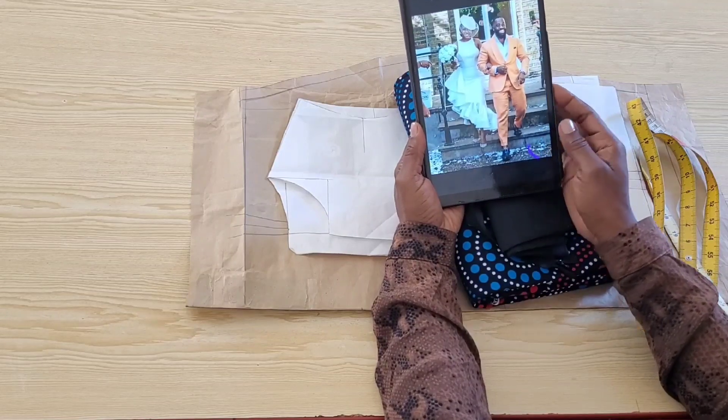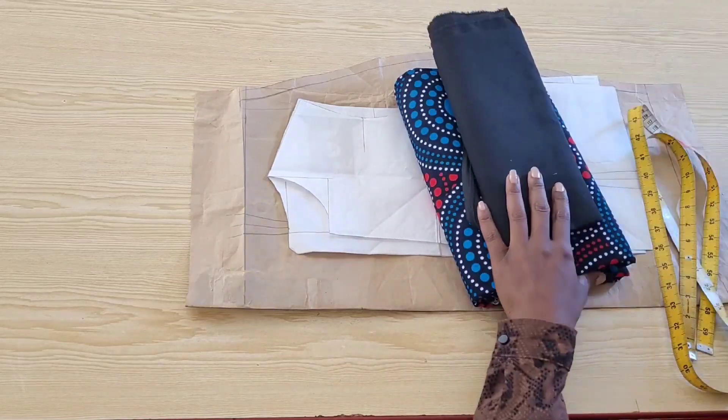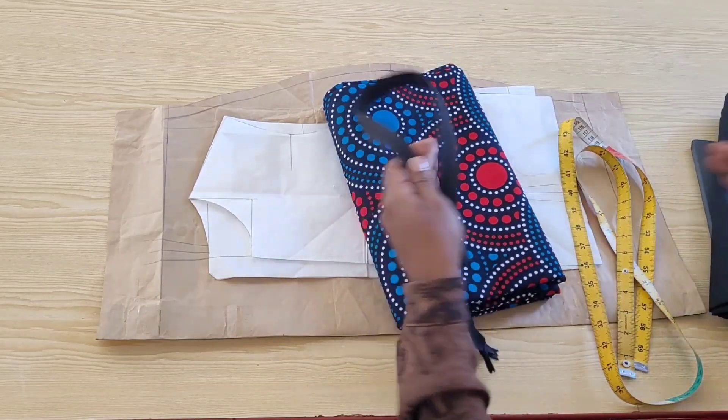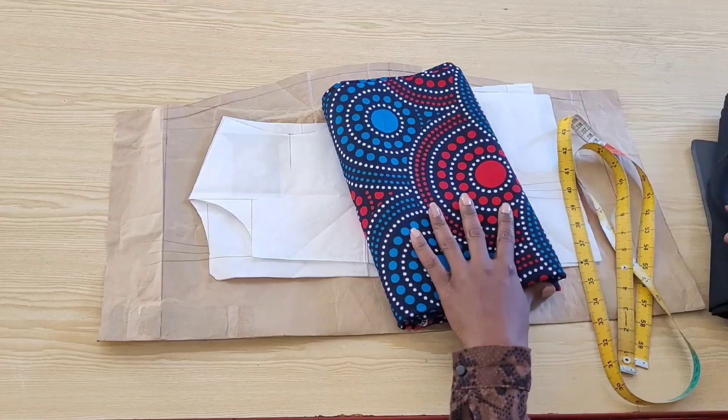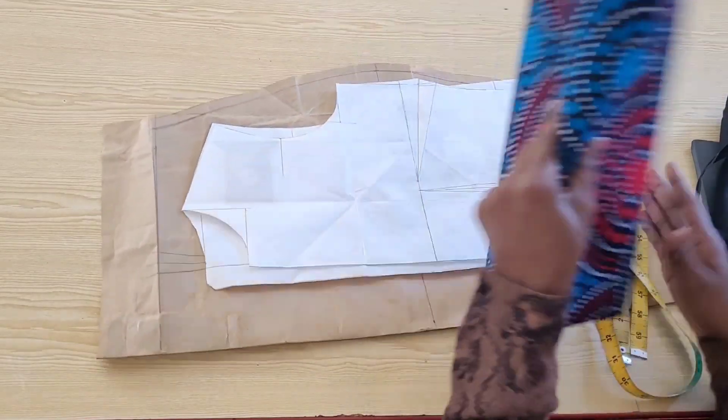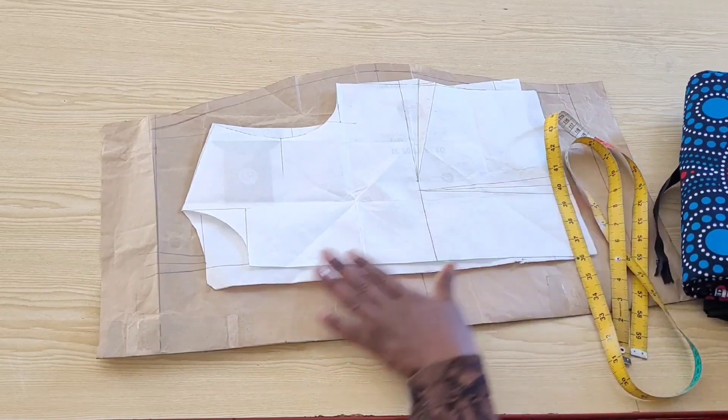These are the materials we'll be working with. I have here some cotton lining, an invisible zipper measuring 30 inches, this beautiful and colorful wax print or ankara, and also the basic bodice block and the skirt block which I've drafted using my client's measurements.